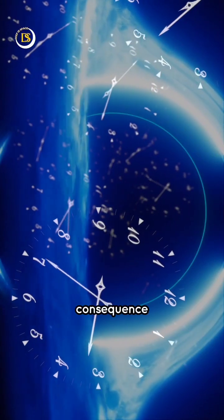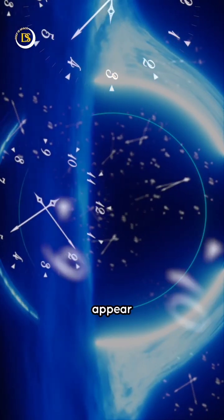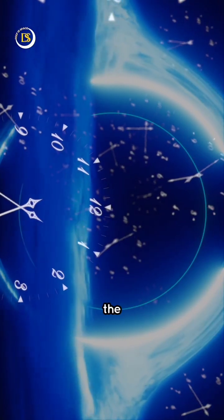Gravitational time dilation, a consequence of Einstein's theory of general relativity, causes time to appear to slow down for an observer nearing the event horizon.